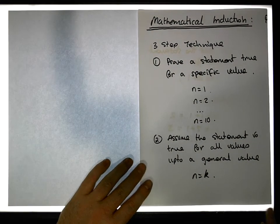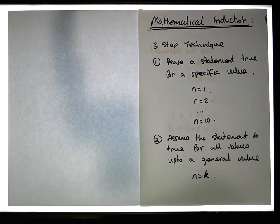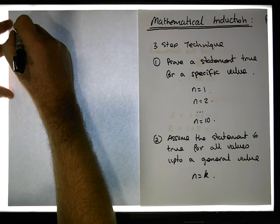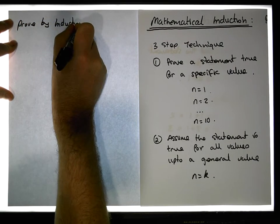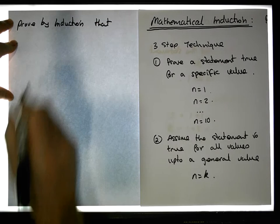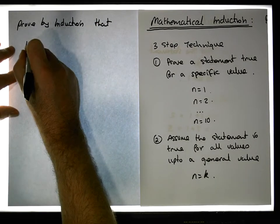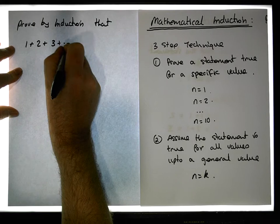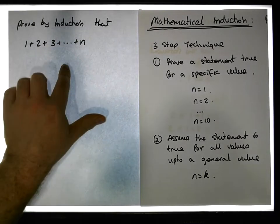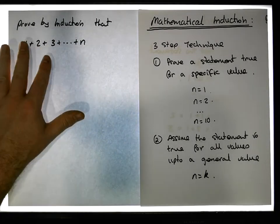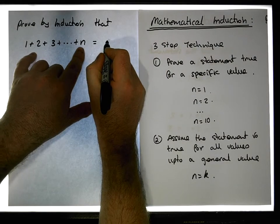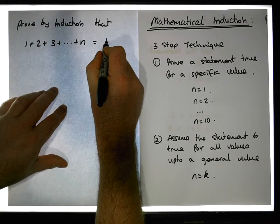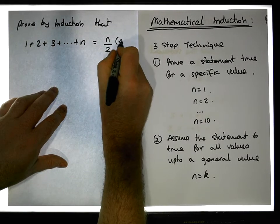A standard example is looking at the sum of the first n numbers. Prove by induction that one plus two plus three, all the way up to some specific number — if you were to sum up a finite sequence of numbers, the summation can be simplified to n over two times n plus one.